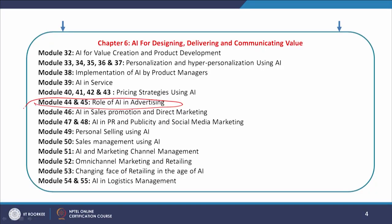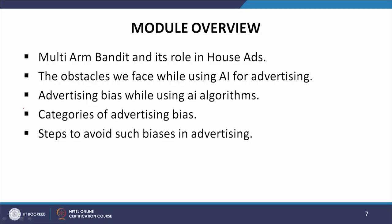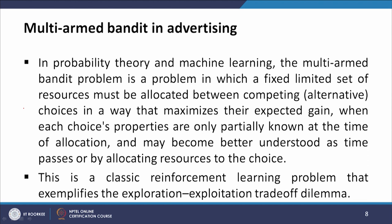As you can see from this slide, we started talking about the role of AI in advertising. In module 44 we started this discussion and the same will continue in module 45. This is part 2 of the topic. The things we will discuss include multi-armed bandits and its role in house ads, obstacles while using AI for advertising, advertising biases, categories of advertising biases, and steps to avoid such biases.